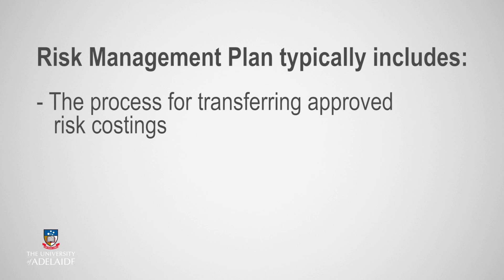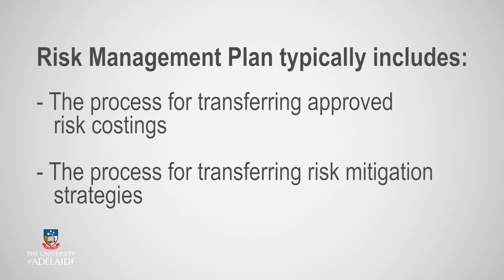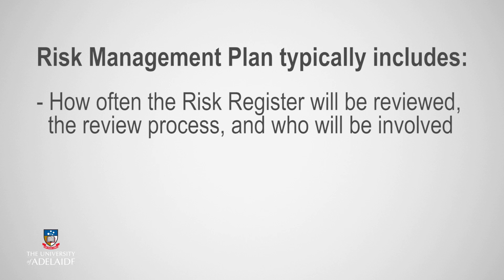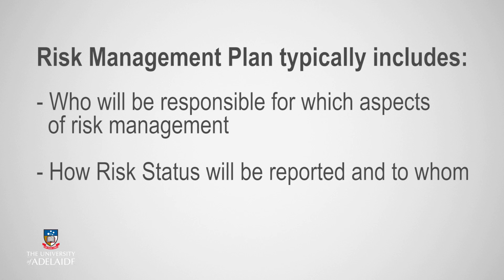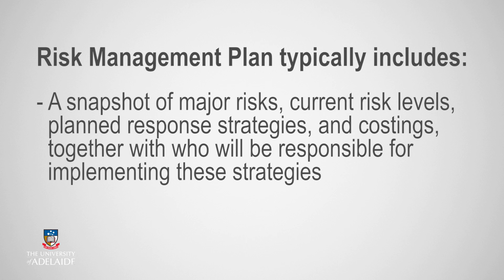The process for transferring approved risk costings into the project budget. The process of transferring risk mitigation strategies into the project work breakdown structure. How often the risk register will be reviewed. The review process and who will be involved in the review. Who will be responsible for which aspects of risk management. How risk status will be reported and to whom. And a snapshot of major risks, current risk levels, planned response strategies and costings together with who will be responsible for implementing these strategies.